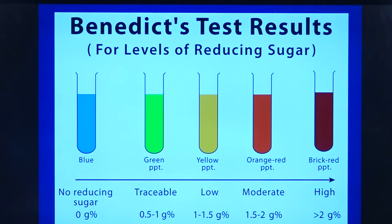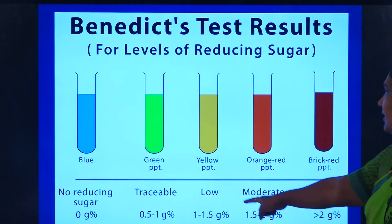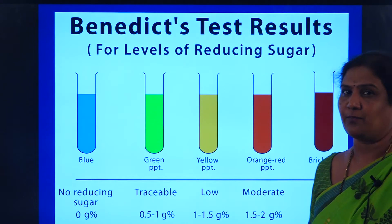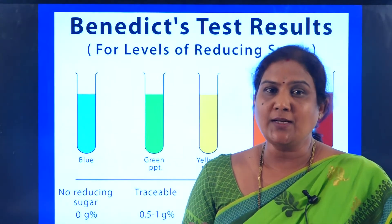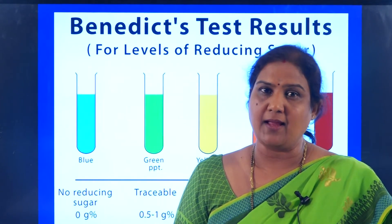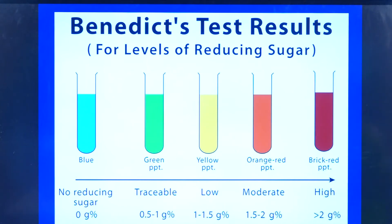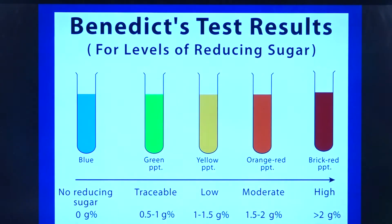If the urine contains more sugar or glucose, a yellow precipitate indicates a low sugar level of 1 to 1.5 percent. An orange red precipitate indicates around 2 percent. A brick red precipitate indicates very high glucose concentration in the urine. In normal human beings, urine does not contain glucose, but if a person is diabetic, the urine will have glucose. If it is more than 2%, the person must take measures to reduce the glucose level in the blood.